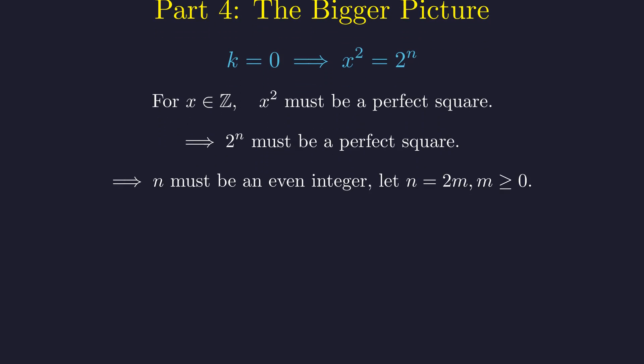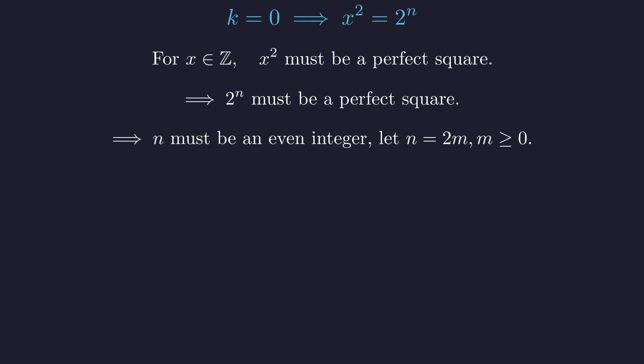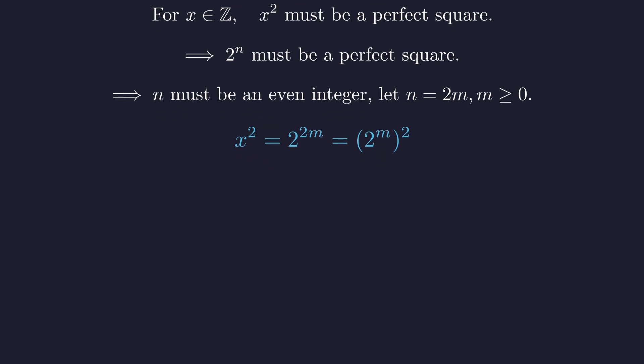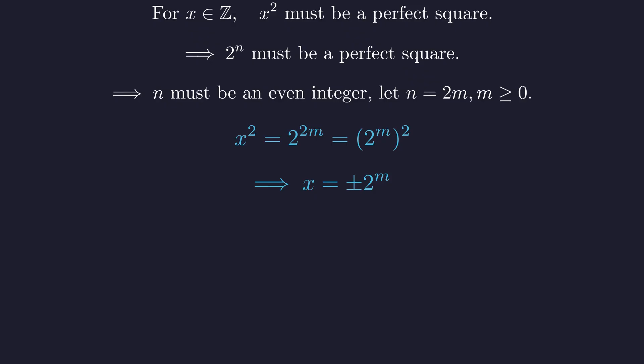For a power of 2 to be a square, its exponent n must be an even integer. Let's call it 2m, where m is any non-negative integer. Substituting this back in, we get x squared equals 2 to the power of 2m.